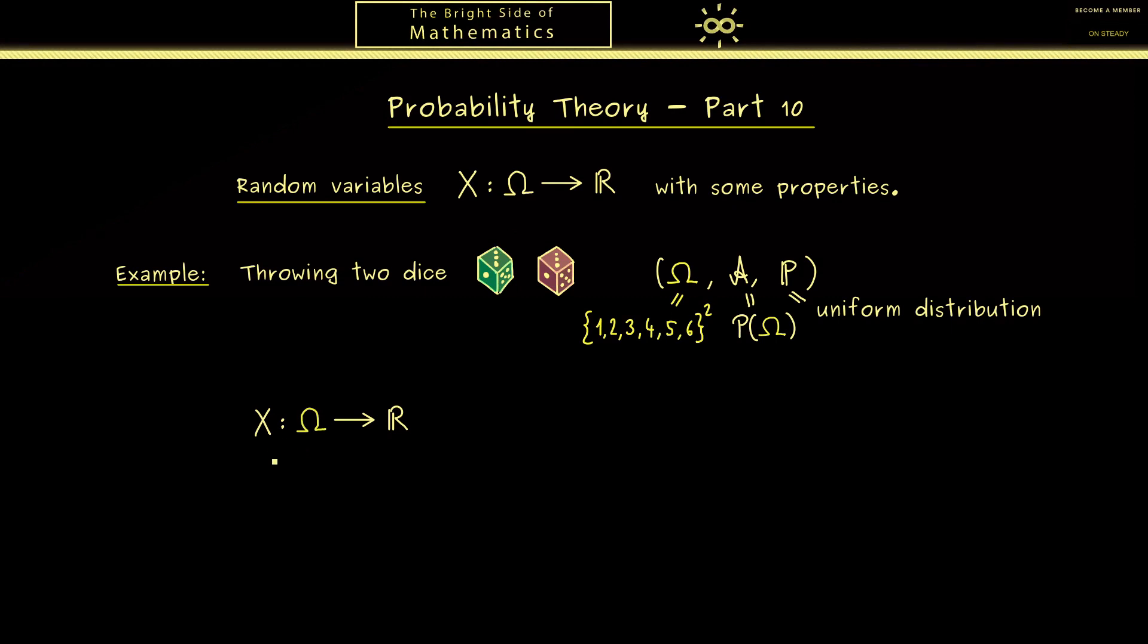So here we have a map from the sample space Ω, which has all the possible outcomes of the two dice, to the real numbers. So what X should do we already know: it should give us the sum of the two numbers. Hence a sample given by (ω₁, ω₂) is mapped to the sum ω₁ + ω₂. So you see, this is not a complicated map at all.